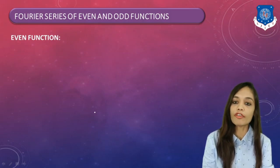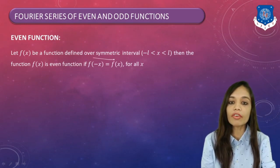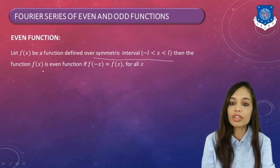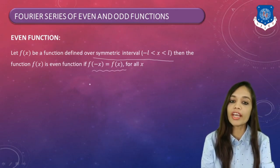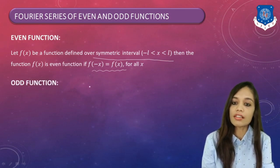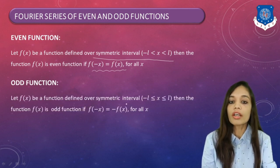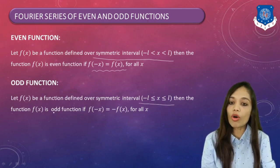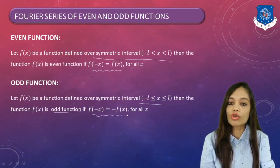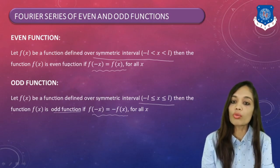First, we will discuss the definition of an even function. If f(x) is a given function defined over a symmetric interval minus L to L, then f(x) is known as an even function if f(−x) = f(x) for all x. Next, the definition of an odd function: f(x) is known as an odd function if f(−x) = −f(x) for all x. The interval must be symmetric for a function to be classified as even or odd.